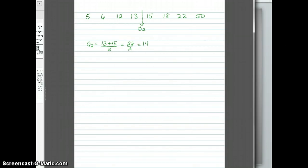Now we're going to find Q1. So we're looking only at the values that are above or to the left of Q2. And that means that our median of those values will fall between 6 and 12. So our Q1 is equal to 6 plus 12 over 2, or 18 divided by 2, which is 9.